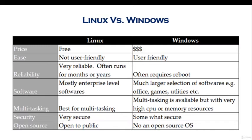Reliability: Linux is very reliable. Often it runs for months and years where you don't even have to reboot it. Whereas in Windows, it often requires a reboot. Now, Windows has done a lot better — its operating system has become a lot more stable where you don't need to reboot or it doesn't crash as often.